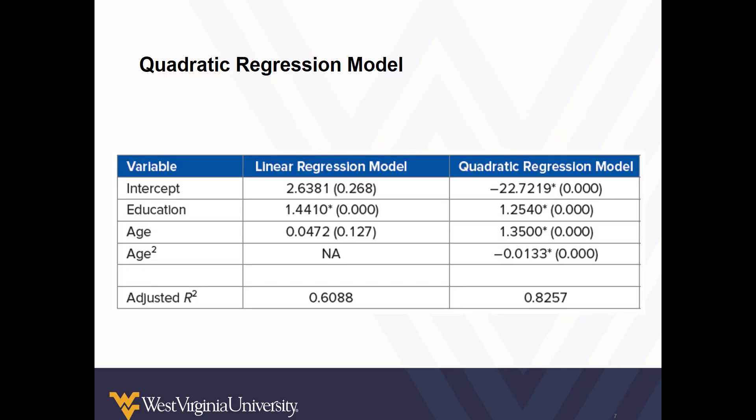Here are the results of the linear regression model and the quadratic regression model where we add a component that is raised to the second power. If we're still unsure after looking at that scatter plot, we can try running models with both specifications. Let's try to estimate wage using education and age.